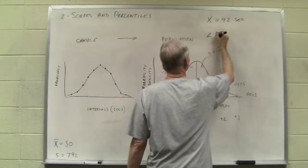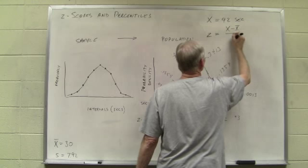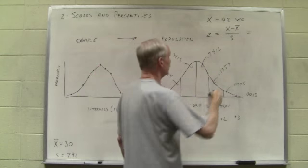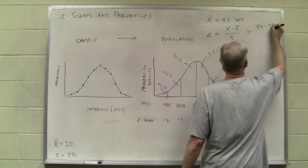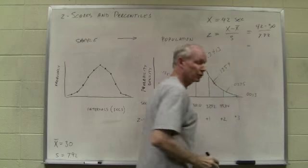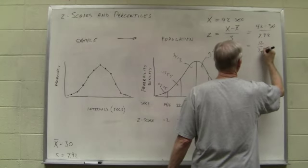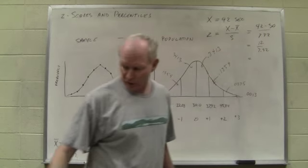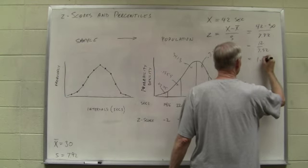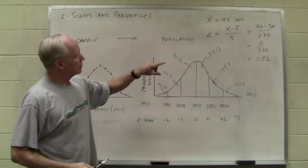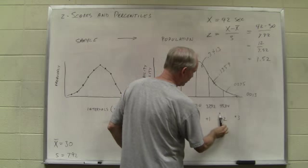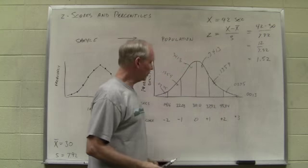We're going to turn it into a z-score, as we did in an earlier module. We simply take the deviation score and express it in standard deviation units. 42 minus our mean of 30 over our standard deviation of 7.92. That gives us a 12 over 7.92, and that gives us a z-score of 1.52. Our person's time of 42 seconds is a little bit more than 1.5 standard deviations above the mean. The z-score of 1.52.